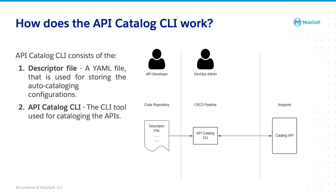The API Catalog CLI includes a descriptor file, which can be stored on your local system under a project directory or stored in the code repository of the corresponding API by the developer. The descriptor file describes the intent of the developer to catalog their API specification in AnyPoint Exchange. Once you have your descriptor file, you can use the API Catalog CLI tool to run it under the command line, or you can have the DevOps admin run it within the CICD pipeline. The API Catalog CLI tool is a command line tool that processes the descriptor file, gathers and packages files, and interacts with the AnyPoint Platform Catalog API.